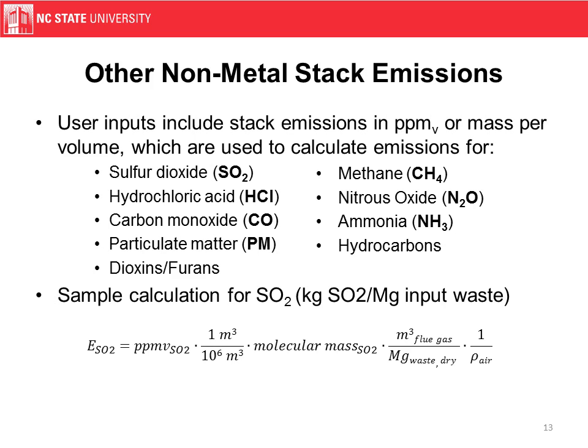There are also other non-metal stack emissions — things like sulfur dioxide, carbon monoxide, and particulate matter — that we are very interested in calculating. A lot of them are tied to facilities and not necessarily tied as much to the actual waste components themselves. What we've done is take facility input data, which is often in terms of parts-per-million volume, do some unit conversions, tie it to the molecular mass of the compound, and then use some air parameters to calculate the emission. The meters-cubed flue gas per mass waste is calculated using the air supplied, or alpha value, that we saw earlier.